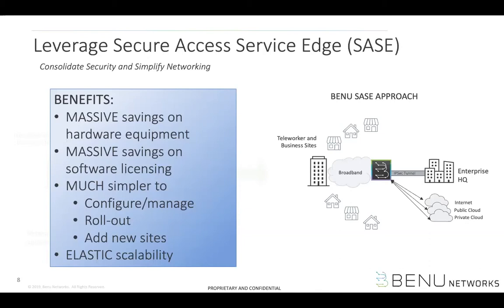It's much simpler to configure and manage, easier to roll out, and very easy to add sites. You have elastic scalability, so if you want to add new security capabilities, you can simply get that enabled in the network via the carrier partners. Additionally, the carrier now has the opportunity to upsell higher levels of security services and drive more revenue for the enterprise customer over time, without having to change any of the infrastructure. You can also use low-cost, compatible Wi-Fi APs and CPEs, much like the TIP AP we'll be talking about today.